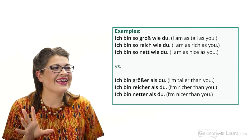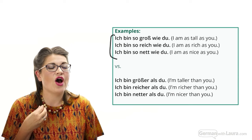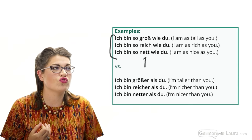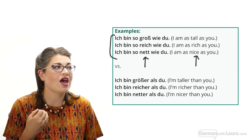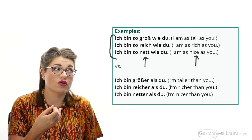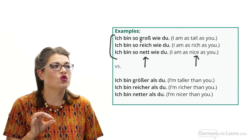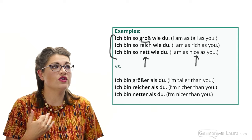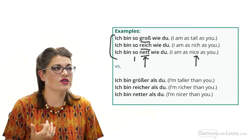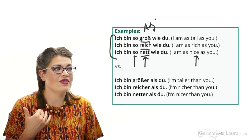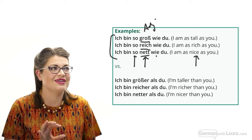In this set of equal comparisons, you can see how the adjective is swapped out in both languages — 'as tall as you,' 'as rich as you,' 'as nice as you.' The same in German: 'Ich bin so groß wie du,' 'Ich bin so reich wie du,' 'Ich bin so nett wie du.' It's always: so + adjective + wie.